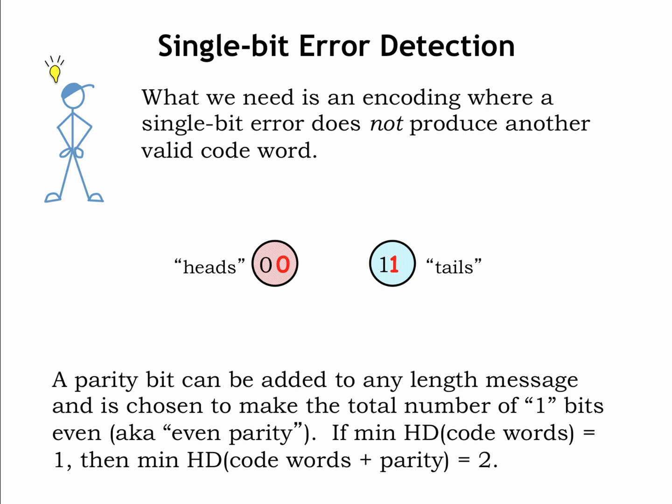How does this help? Consider what happens when there's a single-bit error. 0,0 would be corrupted to 0,1 or 1,0, neither of which is a valid codeword. Aha! We can detect that a single-bit error has occurred.